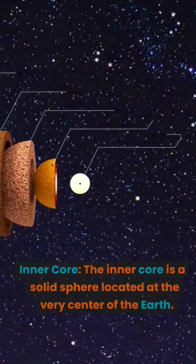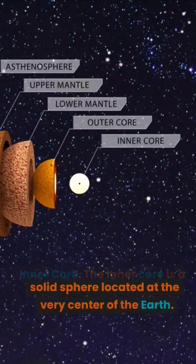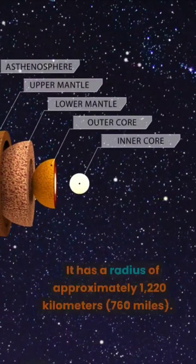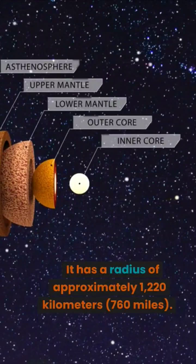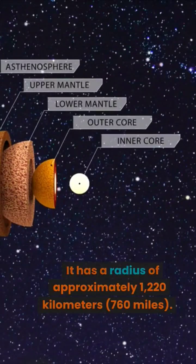Inner core. The inner core is a solid sphere located at the very center of the Earth. It has a radius of approximately 1,220 kilometers, 760 miles.